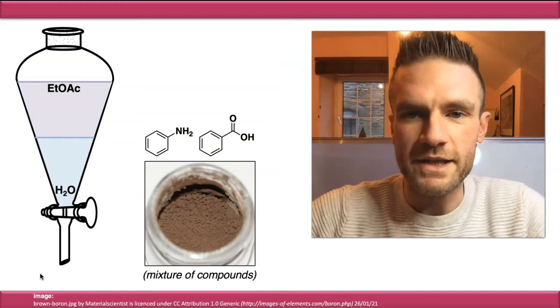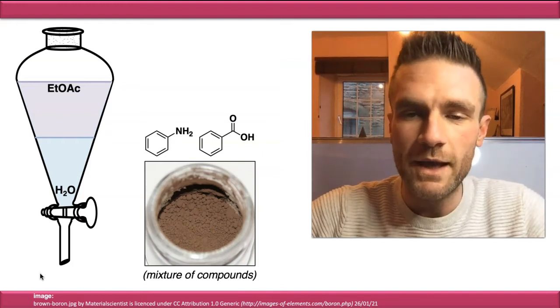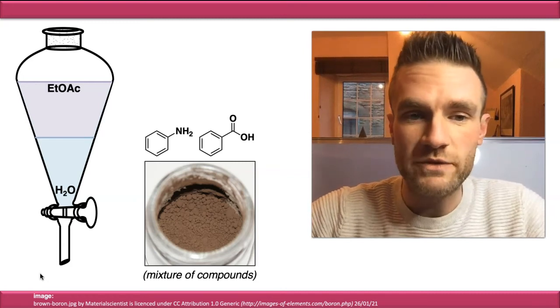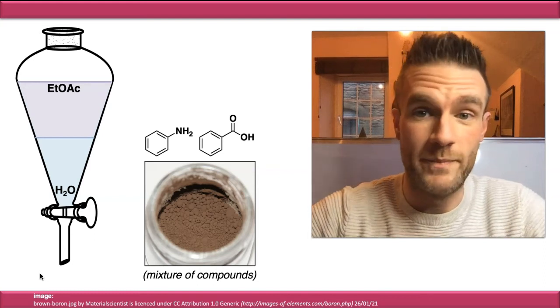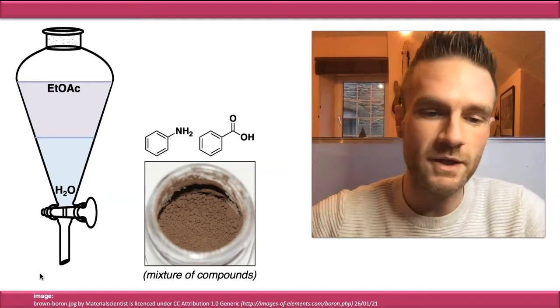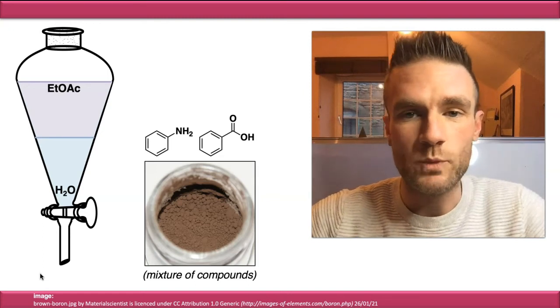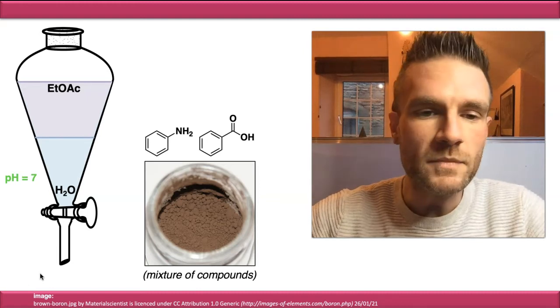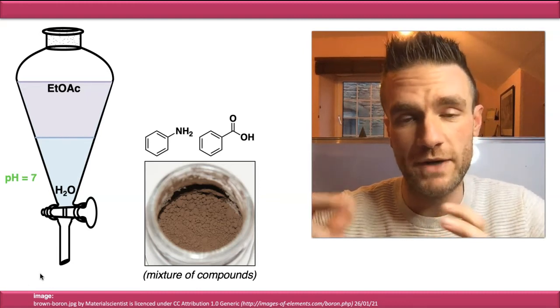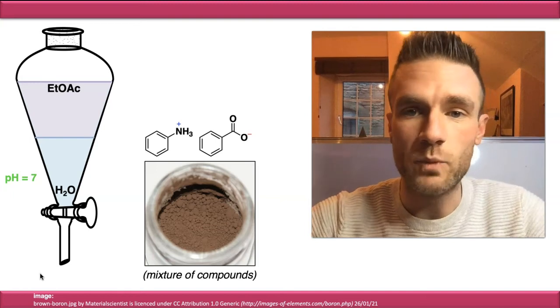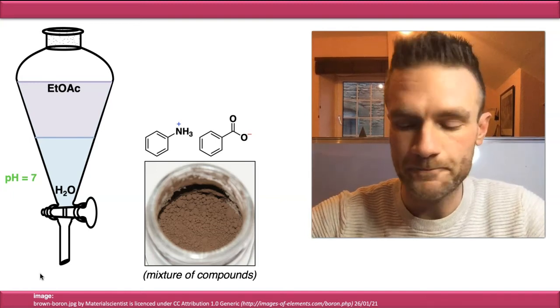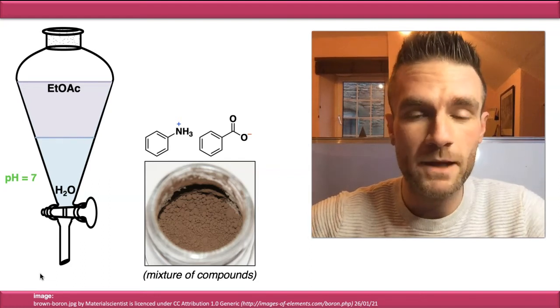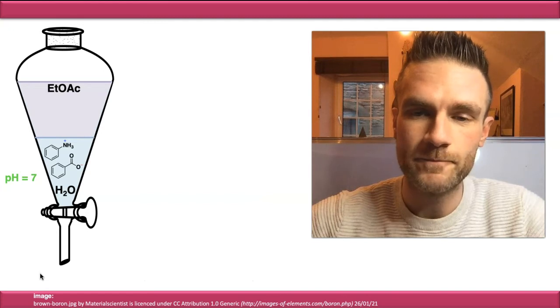So we can also do more advanced things with liquid-liquid extraction. And if our molecules are responsive to pH, then we can separate those as well. So in this case, we've got an amine and a carboxylic acid, which are basic and acidic respectively. And if these are a mixture of compounds and we partition them between water and ethyl acetate, water being at pH 7, then these two compounds will react with each other in an acid-base reaction, and we'll end up with a pair of ions basically. So because these compounds are now ionic, they're charged, they're more polar, so they both prefer to be in the water phase.